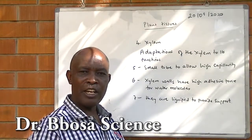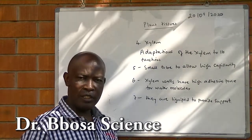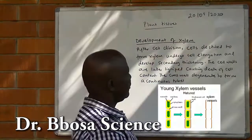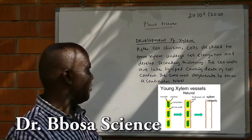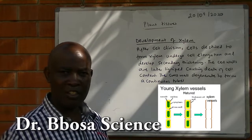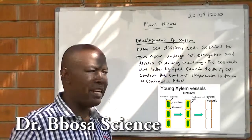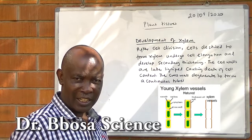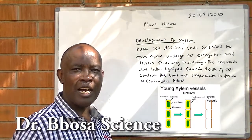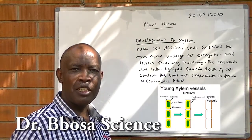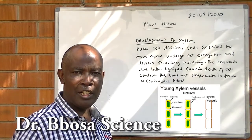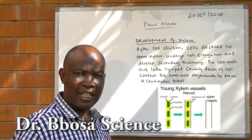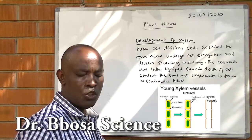Seven, they are lignified for support. Eight, development of the xylem: after cell division, the cells become xylem, undergo cell elongation and secondary thickening. Later, cell walls are lignified, causing the death of the cell contents. The cross walls degenerate to form long continuous tubes.